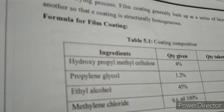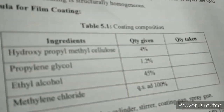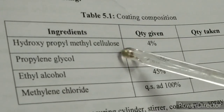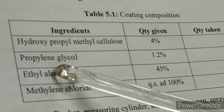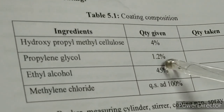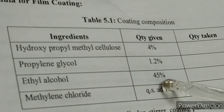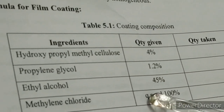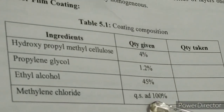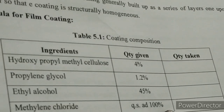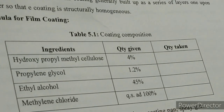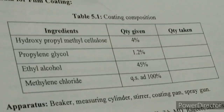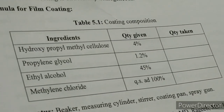Now we will see the formula for coating. Today we go for film coating. It requires the polymeric material hydroxypropylmethylcellulose at 4%. Next, polyethylene glycol at 1.2%, which acts as a plasticizer. Ethyl alcohol as a co-solvent at 45%, and final volume makeup with methylene chloride. Organic solvents are used because they evaporate easily. If we go for aqueous solvents, degradation may take place and the tablet surface may rupture, break, or tablets may start to degrade because it requires more time for evaporation.